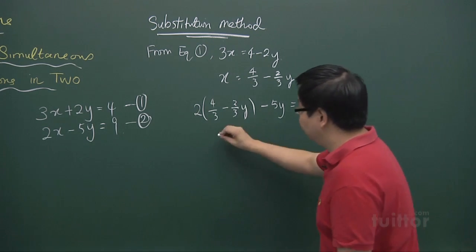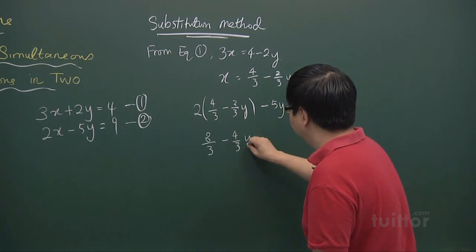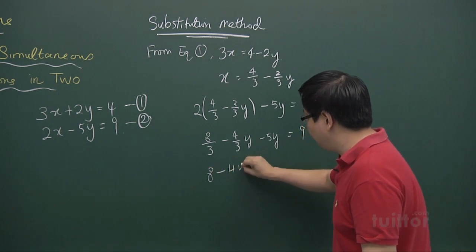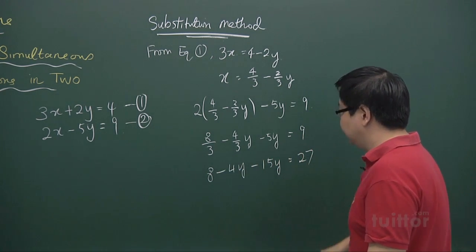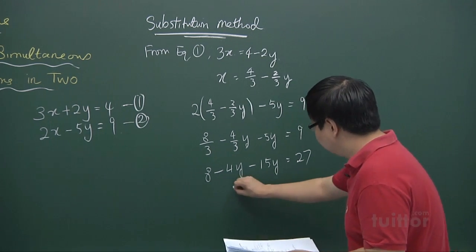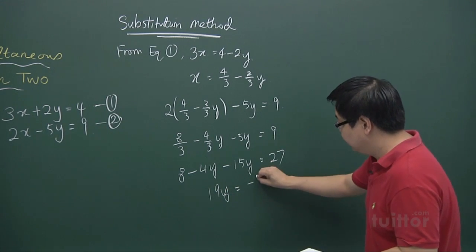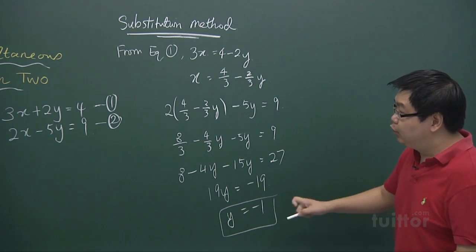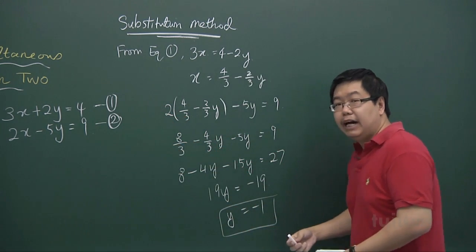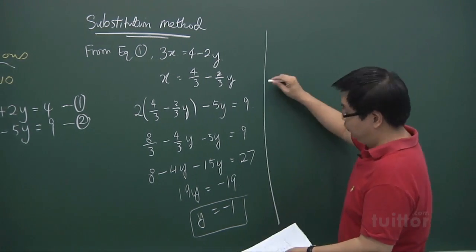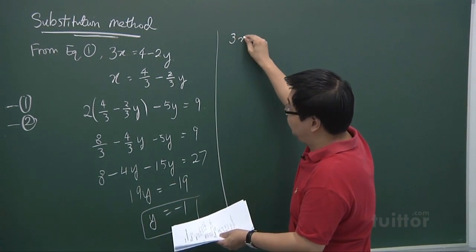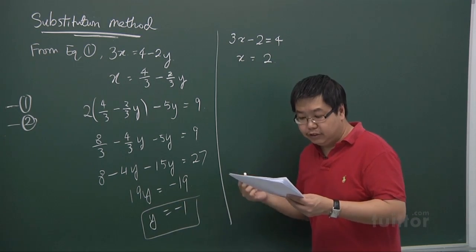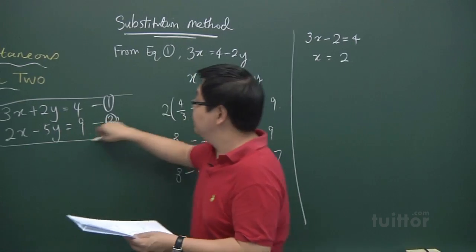If you multiply throughout by 3, you get 8 minus 4y minus 15y equals to 27. So we will have 19y equals to minus 19, and hence y equals to minus 1. Once you obtain the value of y, we can substitute into equation 1 or equation 2 to find x. Substituting into equation 1, we have 3x minus 2 equals to 4, so x equals 2. These are the solutions using the substitution method.